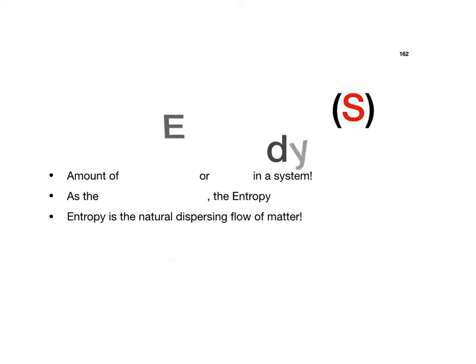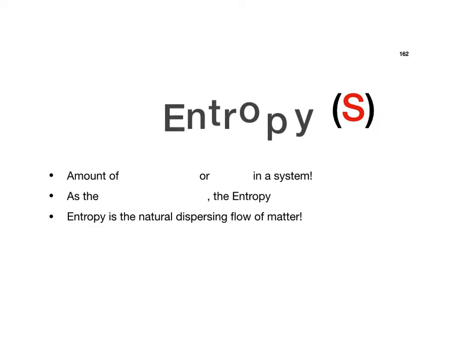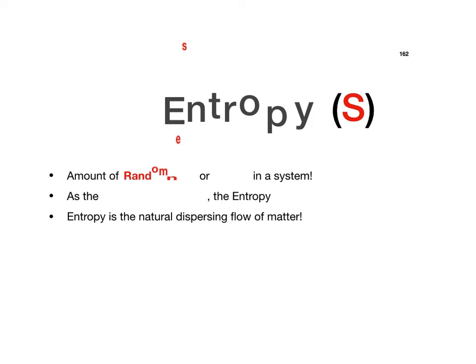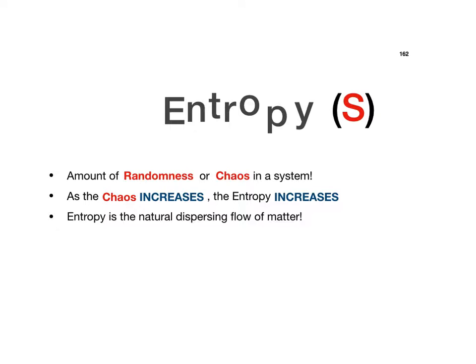Note page 162. Entropy represents the amount of randomness or chaos in a system. As the chaos increases, the entropy also increases. Entropy represents the natural dispersing flow of matter.